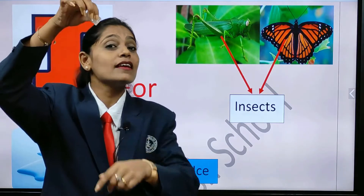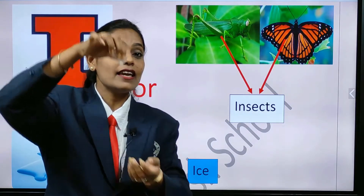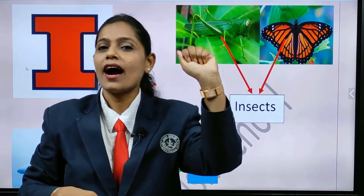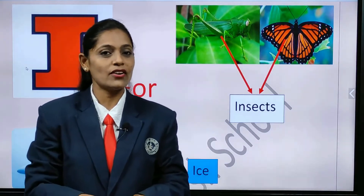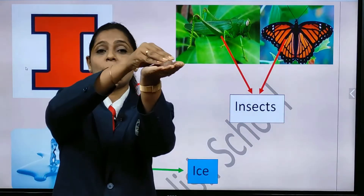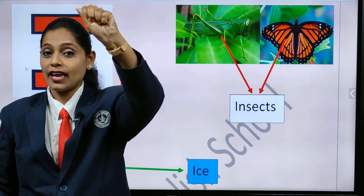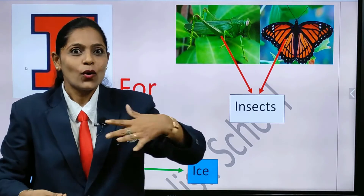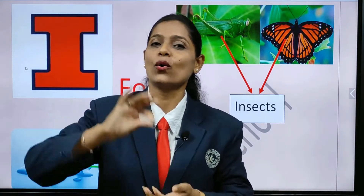When it melts, what happens? Yes, a drop of water. Can you see? And when you touch it, how do you feel? It is cold. How is it, children? Cold. So once again you can try — take a piece of ice in your palm, keep it and close your palm. How do you feel? Cold, right? Yes, ice is cold.